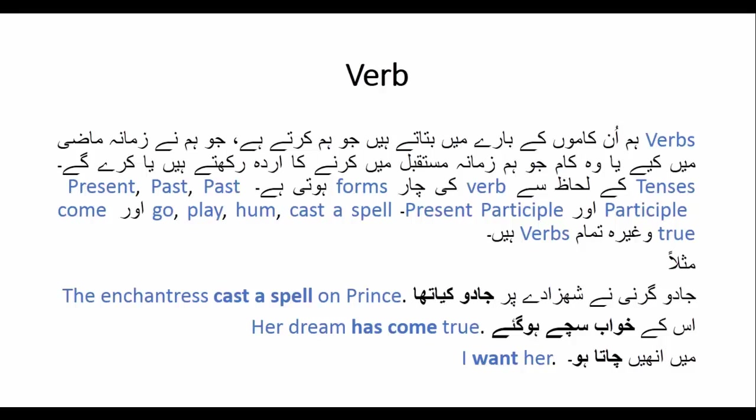کچھ verbs ایسے ہیں جو ایک پورا phrase بناتے ہیں۔ مثلاً 'cast a spell' یعنی جادو کرنا — یہ ایک verb phrase ہے۔ play، go، come true یعنی سچ ہونا — یہ مختلف قسم کے verbs ہیں۔ مثال: The enchantress cast a spell on the prince — یعنی جادوگرنی نے شہزادے پر جادو کیا تھا — یہاں 'cast a spell' ایک verb ہے۔